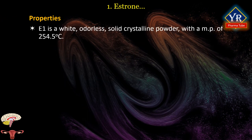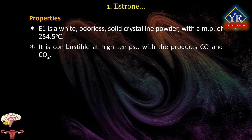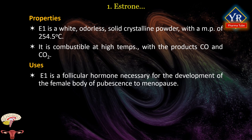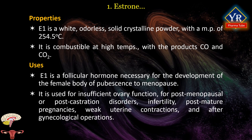Properties of estrone: it is a white odorless solid crystalline powder with a melting point of 254.5°C, combustible at high temperatures producing carbon monoxide and carbon dioxide. Uses: estrone is a follicular hormone necessary for development of the female body from pubescence to menopause. It is used for insufficient ovary function, post-menopausal or post-castration disorders, infertility, post-mature pregnancies, weak uterine contractions, and after gynecological operations. It has been available as an injected estrogen for hormone therapy for menopausal symptoms but is now mostly no longer marketed.